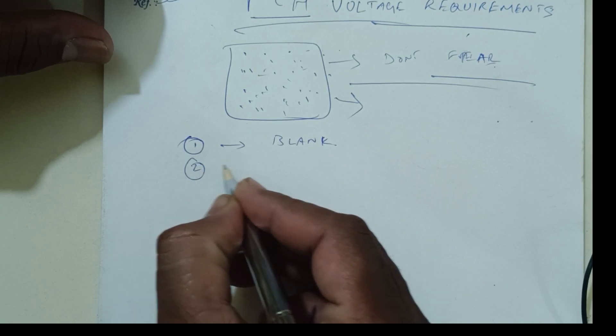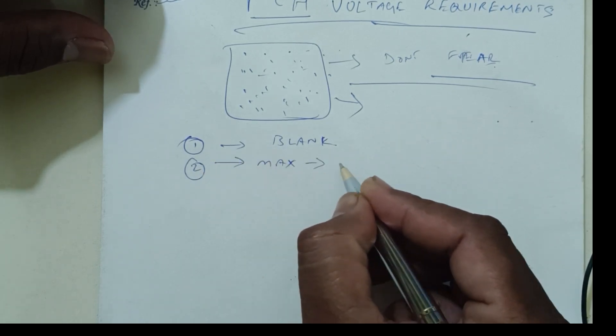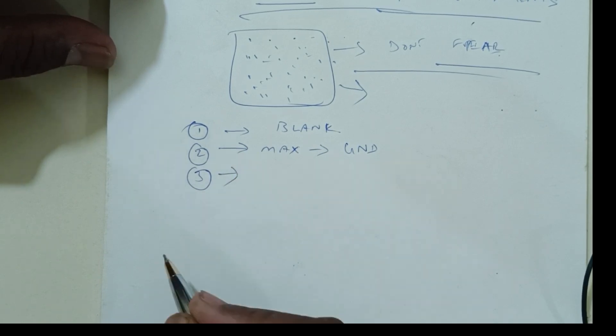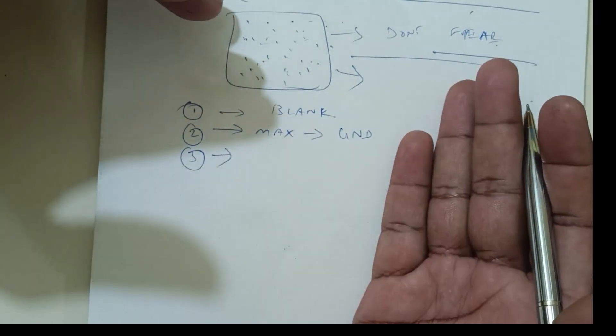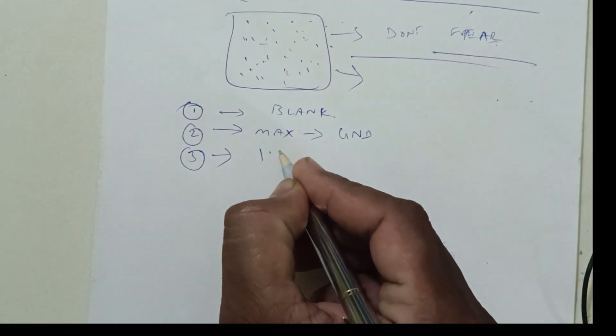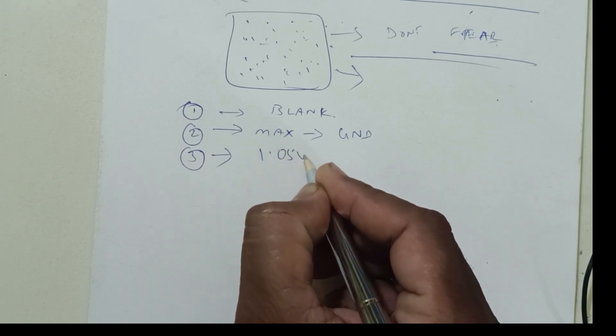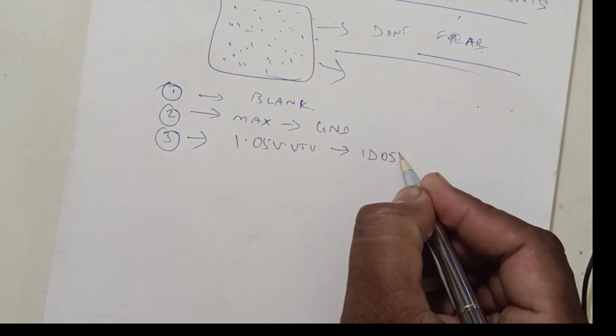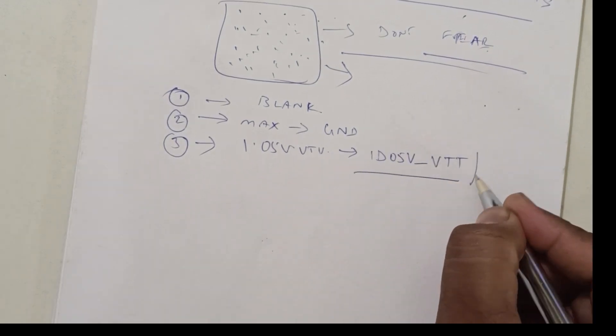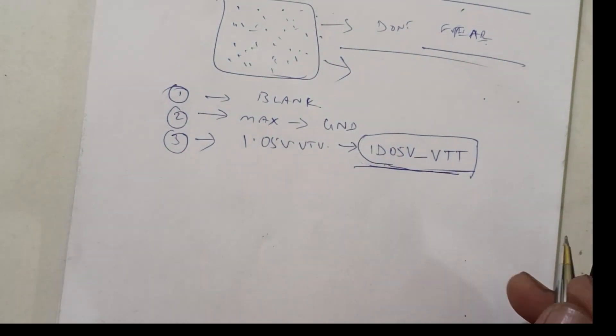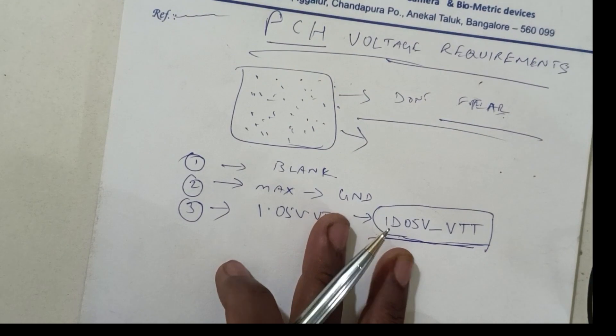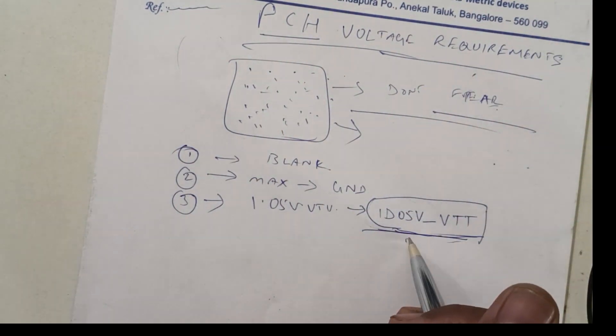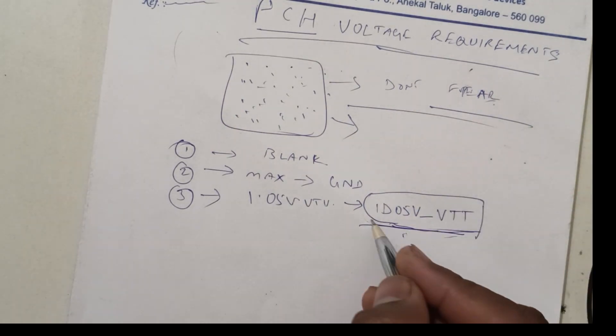Second, maximum number of pins will be ground. Third, maximum voltage same voltage it contains is 1.05 volts VTT. In technical terms, 1D05 volts underscore VTT. This voltage contains maximum number of pins in this PCEH. We are talking about only PCEH voltage requirements, not from where these voltages are coming. In the next chapter, we can go through this.